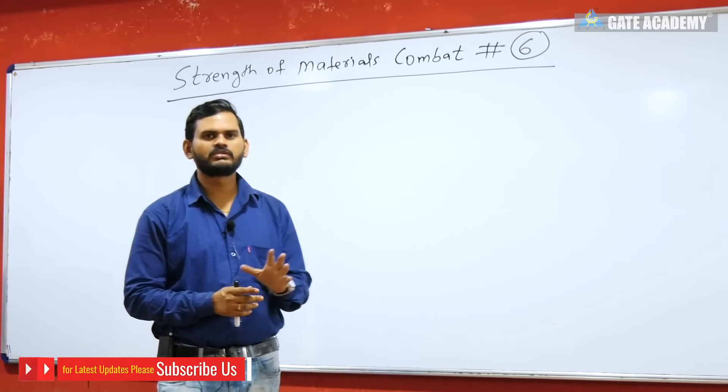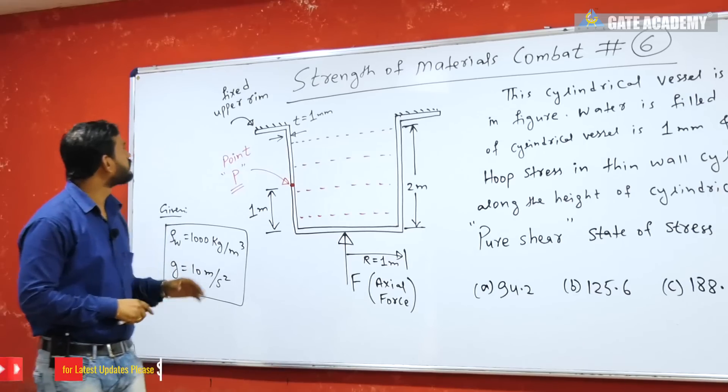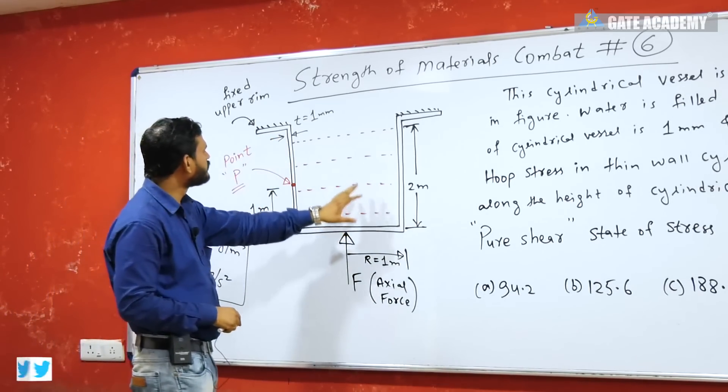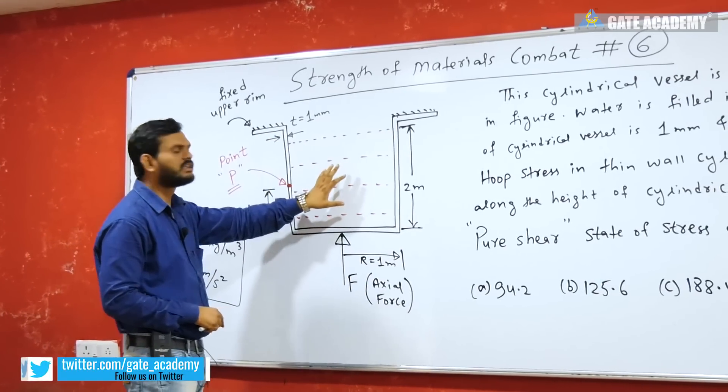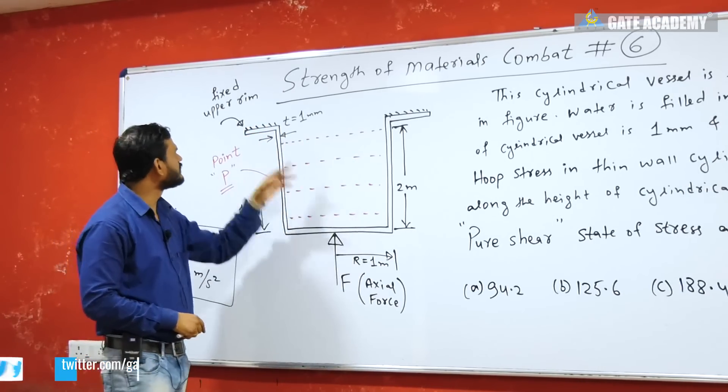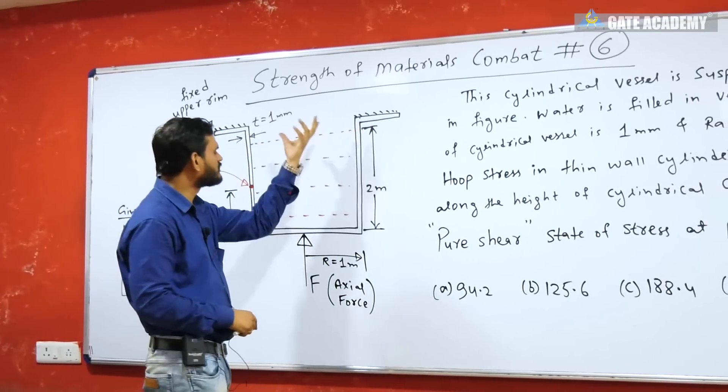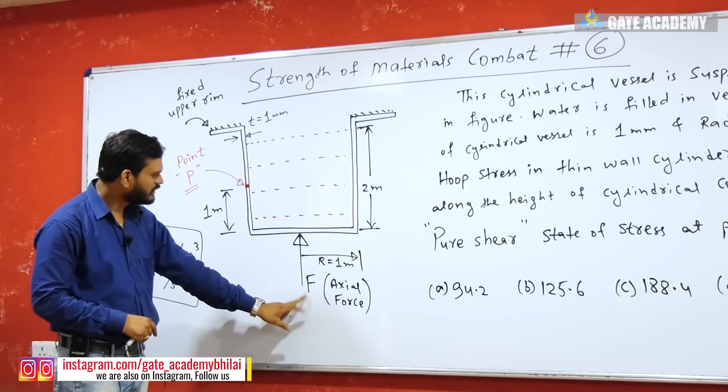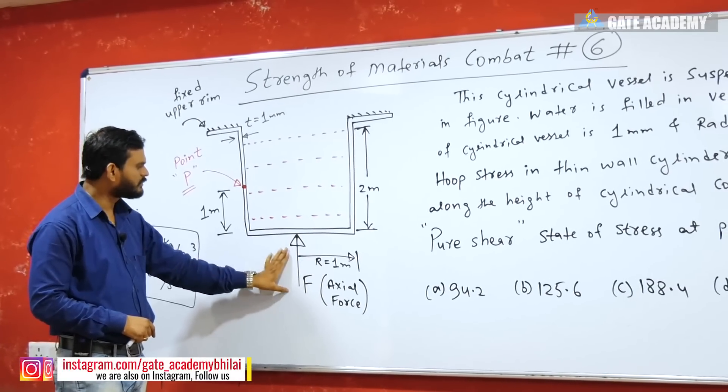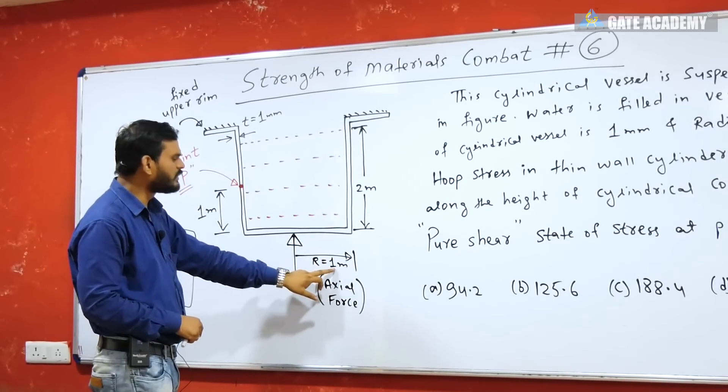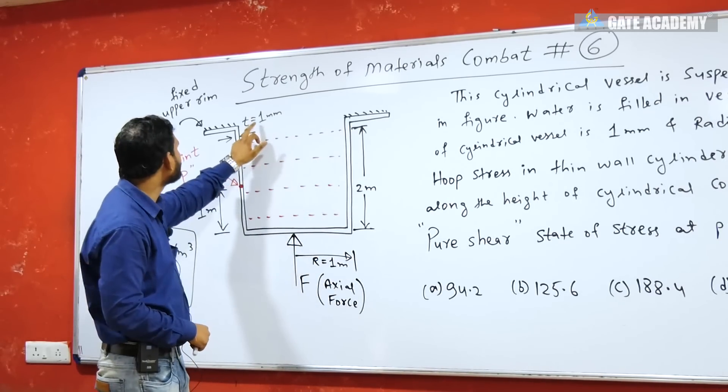Look at this question. What is the problem here? Here we are taking a thin cylinder. We are taking water to fill up and the thin cylinder is on the upper side. The rim is suspended here, fixed here. There is external load, axial force which is compressive in nature. The thin cylinder radius 1 meter is given, its thickness is 1 mm.